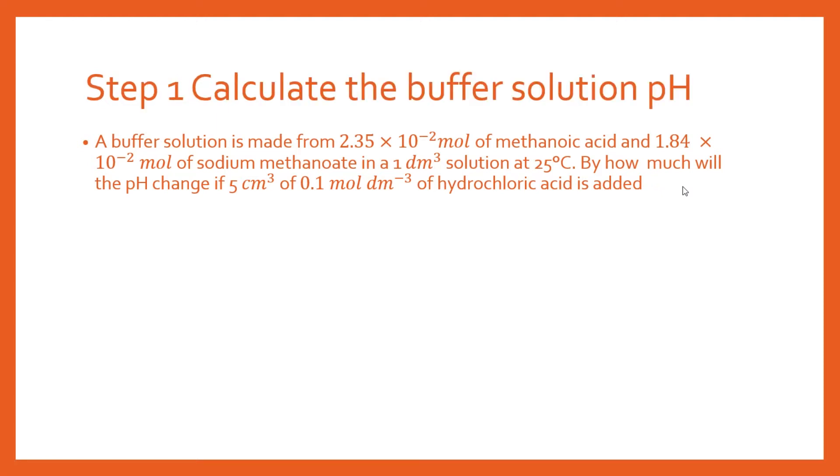So let's start with the first step. What you need to do to start with is calculate the pH of the buffer solution before you add any acid. You can't calculate the change in pH until you know the original pH of your buffer solution. To do this, we need to first look up the pKa value, and when you look up the pKa value for methanoic acid, you will get this value here.